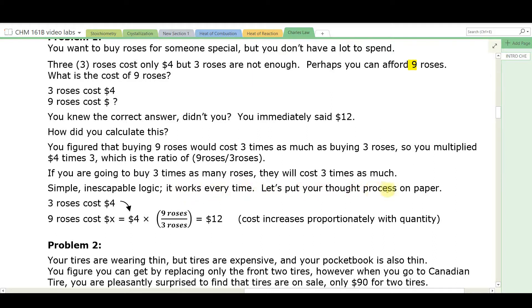Let's put this thought process on paper. Three roses cost $4. Nine roses cost X dollars. To solve for dollars, start with the dollars you know. Multiply by a ratio of roses over roses. The unit of roses will cancel. The unit of dollar is all that's left. What you start with is what you wind up with. Nine roses is three times more than three roses. So the ratio is three to one. So you multiply $4 times three. Cost increases proportionately with quantity.